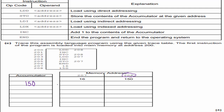Hopefully you paused and gave this one a try — it's the only way you'll get good at it. LDD 208 is done. Now increment the accumulator — we always increment by one, no exceptions. Add 1 to 150 gives 151. Then STO 208 stores the accumulator value back into address 208, so 151 goes there.